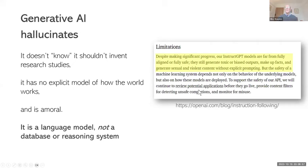Here's part of their blog: 'Despite making significant progress, our GPT models are far from fully aligned or fully safe. They still generate toxic or biased outputs, make up facts, and generate sexual and violent content without explicit prompting.' So, so far, so bad.